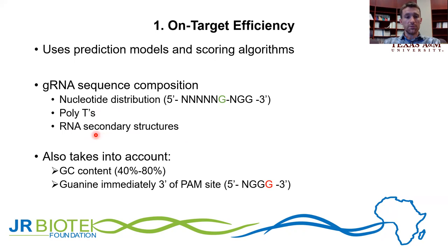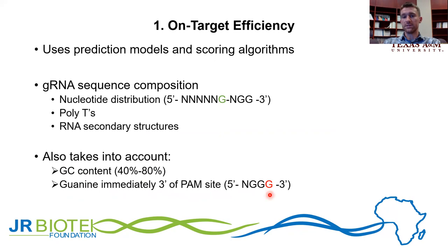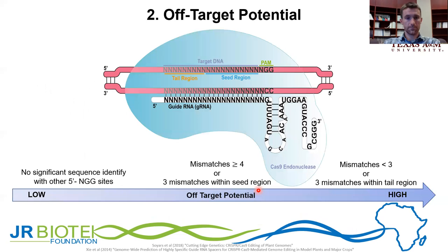RNA secondary structures also need to be taken into consideration. If you have a high level of complementarity between the front end and the back end of your guide RNA sequence, it can fold in on itself and cause an undesirable secondary structure that won't interact with your target. Other factors include GC content — ideally you want between 40 and 80 percent GC. Finally, a guanine immediately 3-prime of a PAM site is seen as undesirable, because since the PAM site is NGG, this can create a secondary PAM site (GGG as opposed to GGN) and cause competition for recognition with your guide.